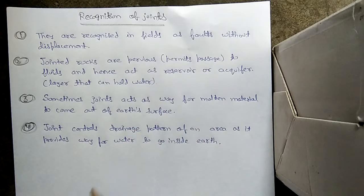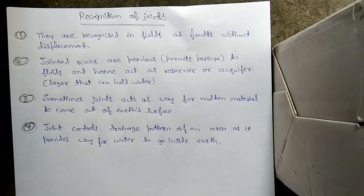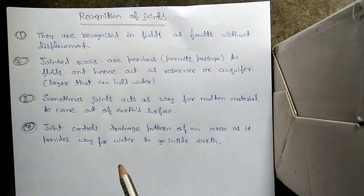Sometimes a joint acts as a way for molten material to come out onto the surface. We see some ways or fissures — fissure means holes — through which molten material comes out. So those may be joints.